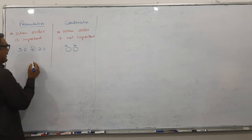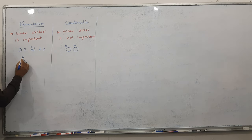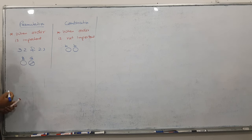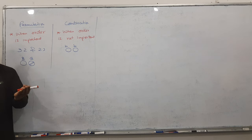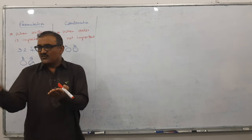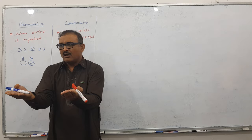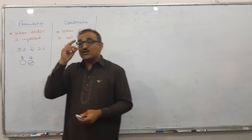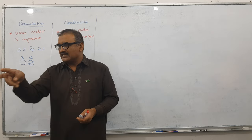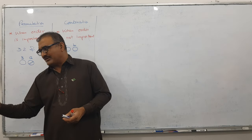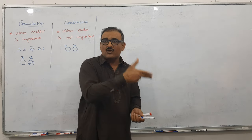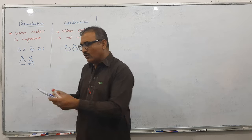But imagine if I have a blue ball and a green ball. If you keep it blue first then green, or green first then blue - there are two options. So you observe that if order matters, I will go for permutation. If order does not matter, I will go for combination. This is the key point of the whole topic.